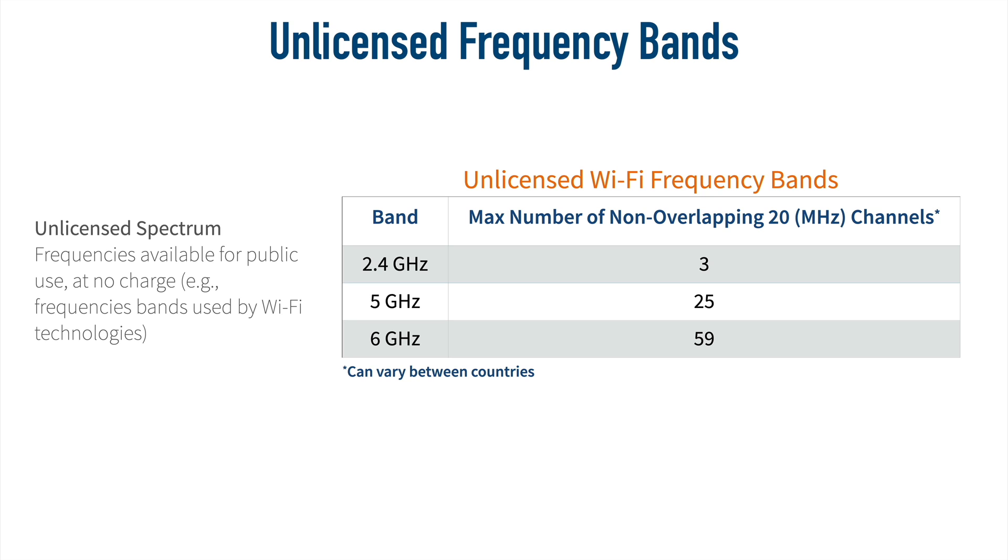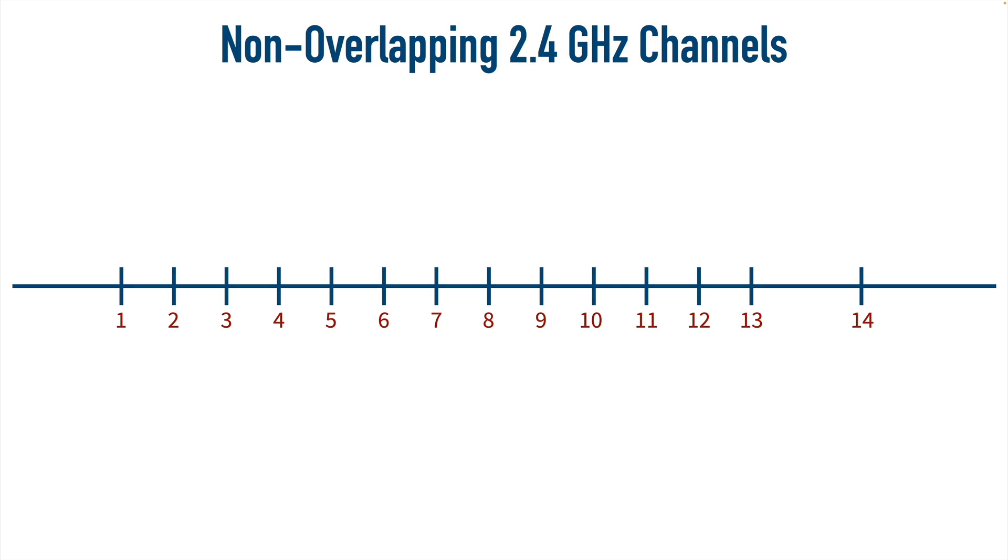And let's wrap up this video by seeing why we do have this limitation for the 2.4 gig band. As we see here, we have 14 channels. And there is a 5 megahertz separation between each channel, with one exception. There's a 12 megahertz distance between channels 13 and 14. By the way, you'll probably never use channel 14. You have to meet two criteria to use channel 14. You have to be in Japan, and you have to be using the really old standard of .11b. So we can largely ignore channel 14.